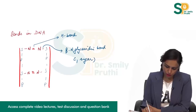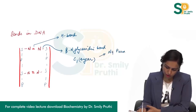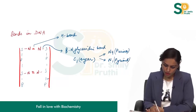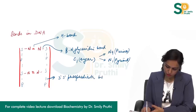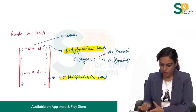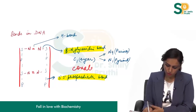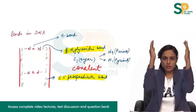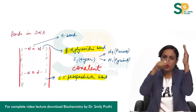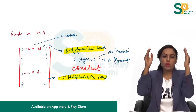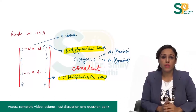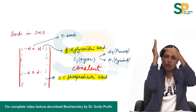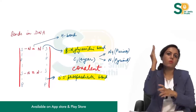C1 of the sugar makes a bond with N9 of purines and with N1 of pyrimidines — this is the beta-N glycosidic bond. The bond between the sugar and phosphate is the 3'-5' phosphodiester bond. Both the beta-N glycosidic bond and the 3'-5' phosphodiester bond are covalent bonds — strong bonds. The two strands are joined by hydrogen bonds, which are weak bonds, so it is easy to break them and separate the two DNA strands as required in replication and transcription. But each individual strand is made up of strong covalent bonds, so it is very difficult to break an individual strand into pieces.